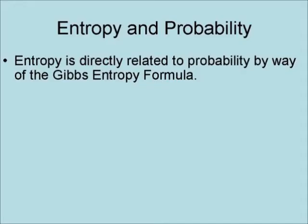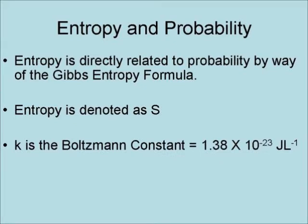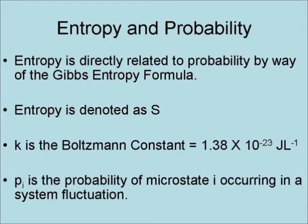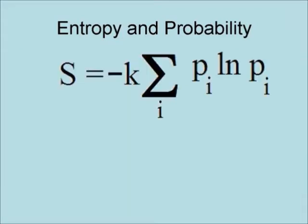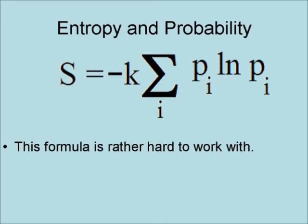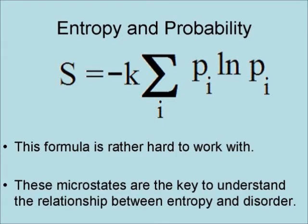Entropy is directly related to probability by way of the Gibbs Entropy Formula. In this formula, entropy is denoted as S, k is the Boltzmann constant, and p sub i is the probability of microstate i occurring in a system fluctuation. The actual formula is minus k times the summation of p sub i times the natural logarithm of p sub i. The big problem with this formula is that it is rather hard to work with. However, these microstates are the key to understanding the relationship between entropy and disorder.